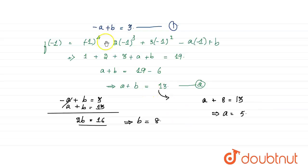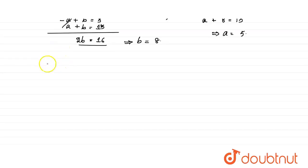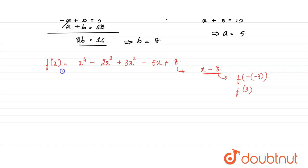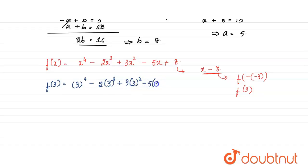With a equals 5 and b equals 8, substituting into f(x) gives f(x) equals x⁴ minus 2x³ plus 3x² minus 5x plus 8. To find the remainder when dividing by (x minus 3), we evaluate f(3).